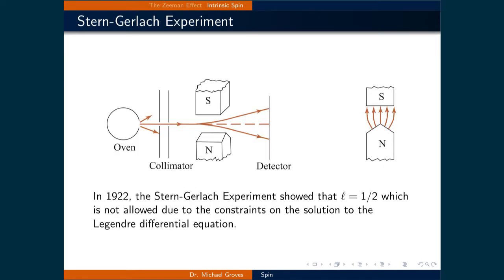What conclusively demonstrated the existence of intrinsic spin in electrons was the Stern-Gerlach experiment. It was performed in 1922 by German physicists Otto Stern and Walter Gerlach. It was an experiment where silver atoms, which have one lone frontier electron, were emitted from a source, collimated, and then sent through a non-uniform magnetic field orientated in the z-direction.